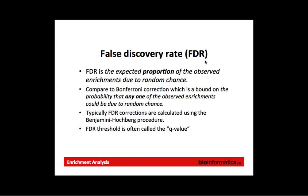You might see FDR — these corrections are typically calculated using the Benjamini-Hochberg procedure. There's a great document available online that explains multiple testing correction very clearly, which I'll add to the wiki. You might see 'Benjamini-Hochberg FDR' in tools. Sometimes the FDR threshold is called a Q value, so you might see that in tools as well.